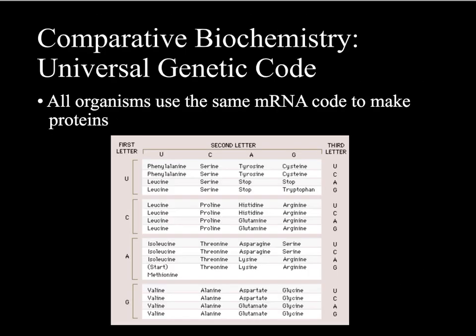Another key idea is that not only can we compare DNA and amino acid sequences, but every organism uses the same genetic code. From the simplest, earliest bacterial life forms to everything you can think of today — all use the same mRNA codes for amino acids when you think about transcription and translation. It's all based on that, which is mind-boggling.